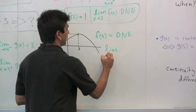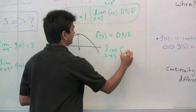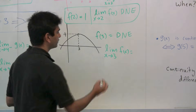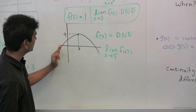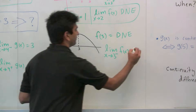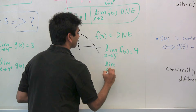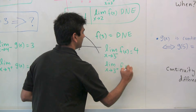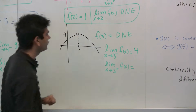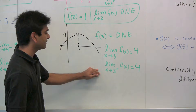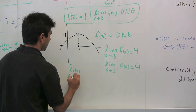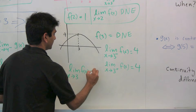But if we look at the limit as x approaches 3 of f of x, again we should jump to the left and right-sided limits. As x approaches 3 from the left — looking at x values of 2.9, 2.99 — the y-value is pretty much 4. If we do the same thing on the right, the limit as x approaches 3 from the right is also 4, because at x values of 3.01, 3.001, the y-value is pretty much 4. Since the left and right-sided limits exist and are equal, we can conclude that the limit as x approaches 3 of f of x is indeed 4.